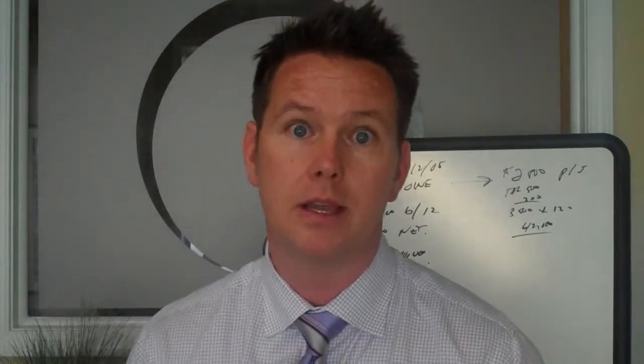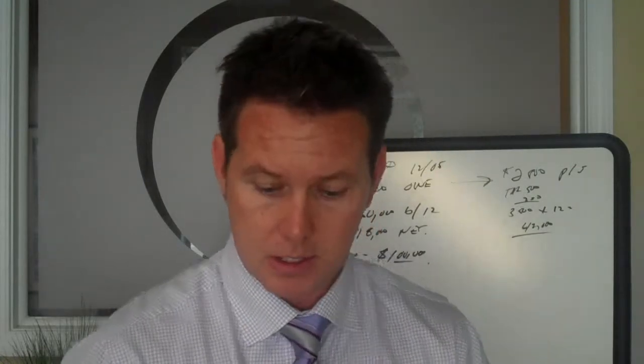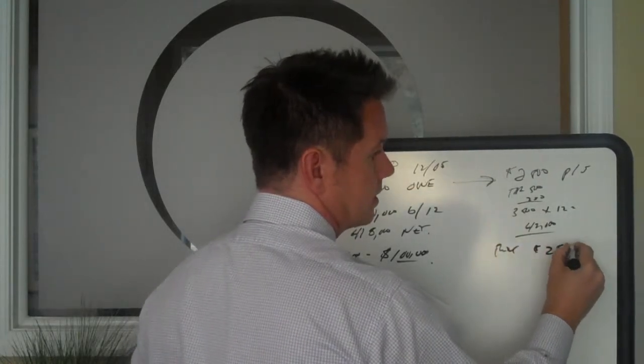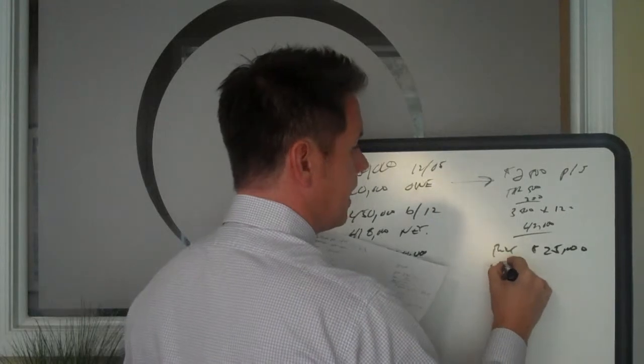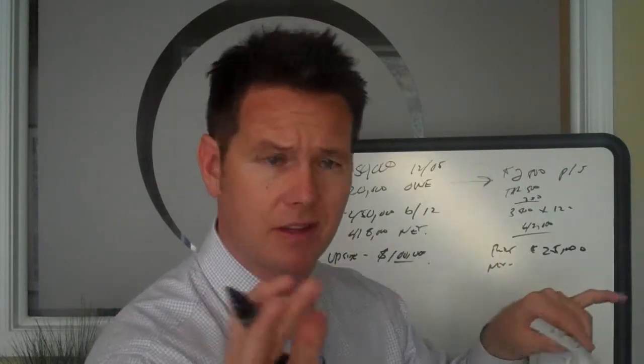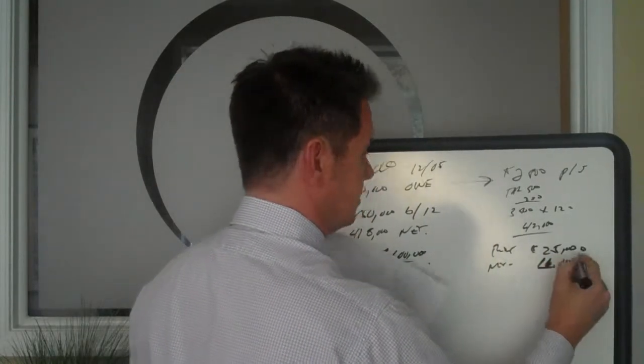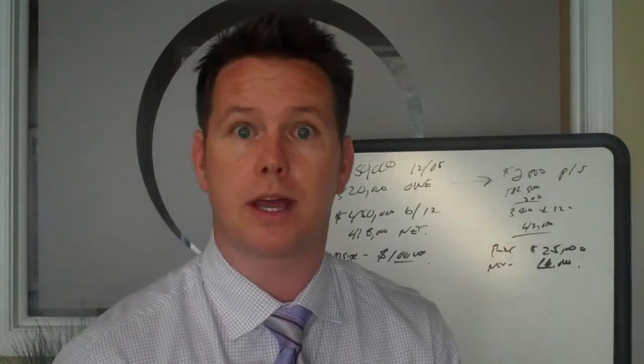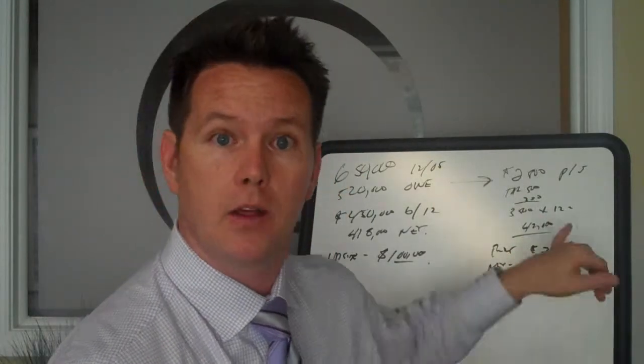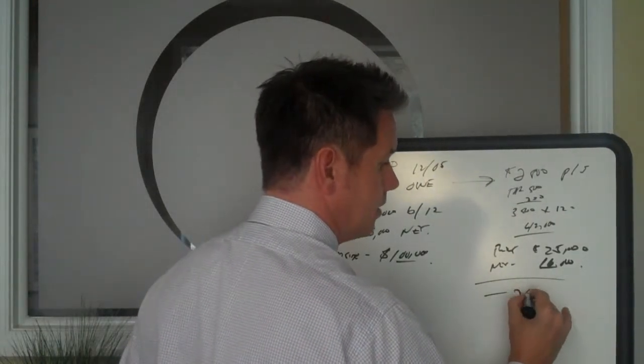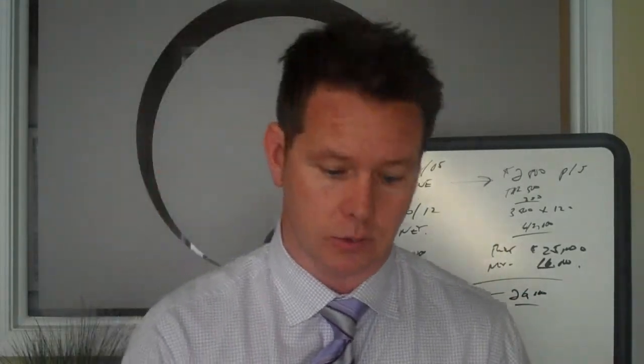Now, in the market that we're in here down the Jersey Shore, in this case scenario, they're able to rent the property out as a second home vacation home and get the income from that. So here's what the rents look like. Rental income, $25,000 gross, and they're going to net out of this after real estate fees, commission fees, cleaning fees, utility fees, everything, they're going to net themselves $16,000. So they bring in a net annually of $16,000, but they're paying out basically $42,000 a year. So right now, they've got a negative cash flow, $26,000.